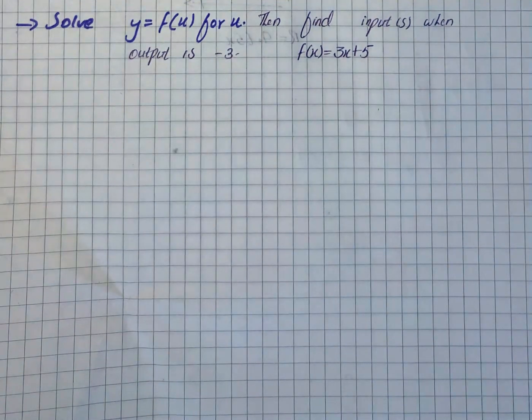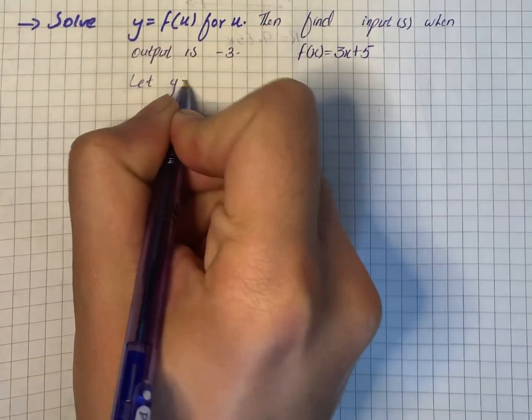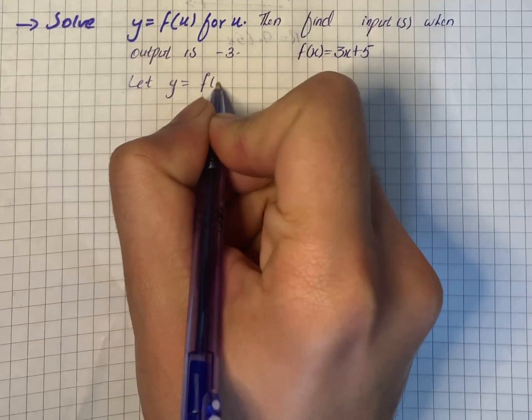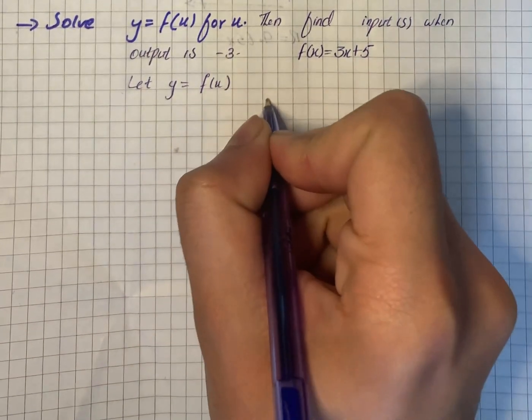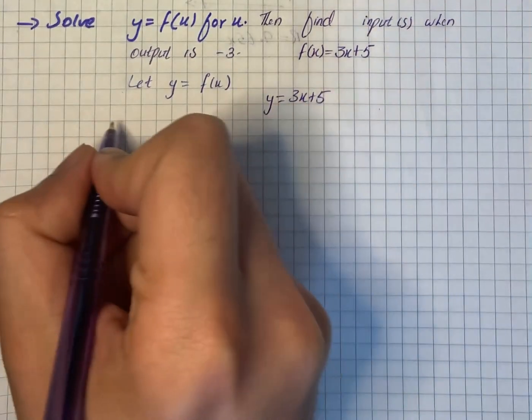The question says solve y equals f(x) for x, then find the inputs when the output is minus 3. So let y equals f(x), so y becomes 3x plus 5.